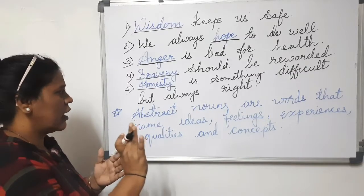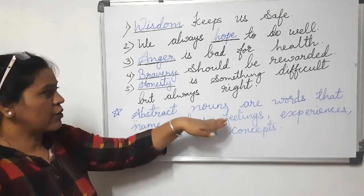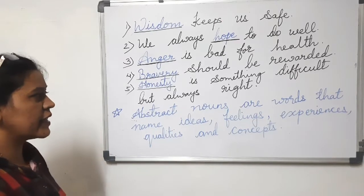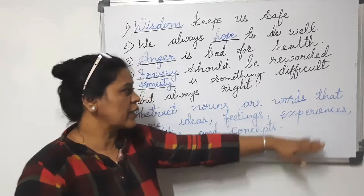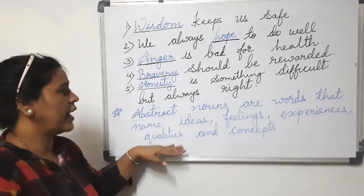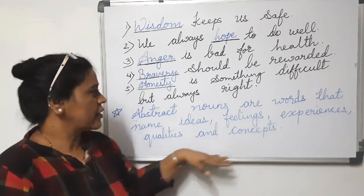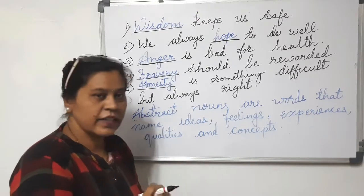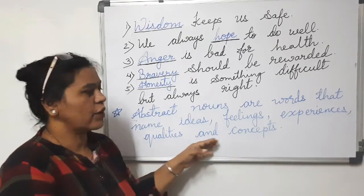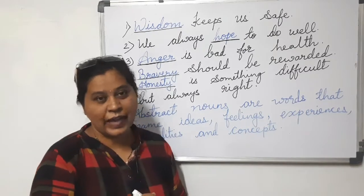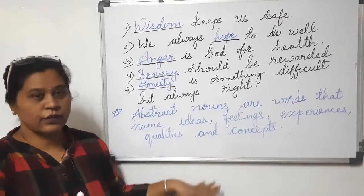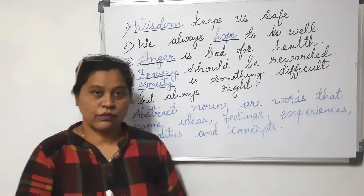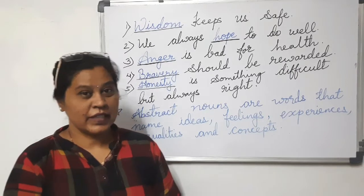In simple terms, abstract nouns are words that name ideas, feelings, experiences, qualities, and concepts. So abstract nouns are the words that name ideas — like ability, for example. You can go through these examples and write many more abstract nouns on your own.